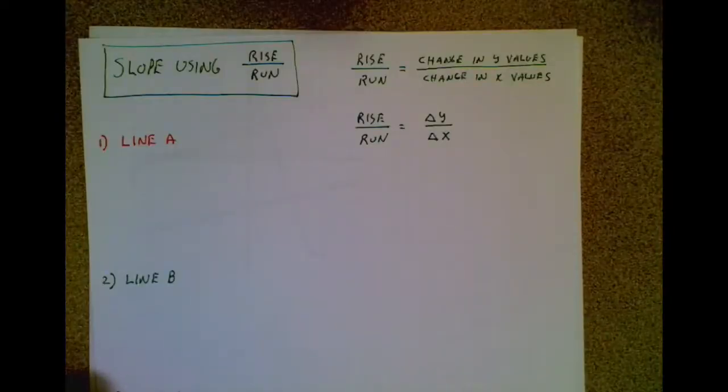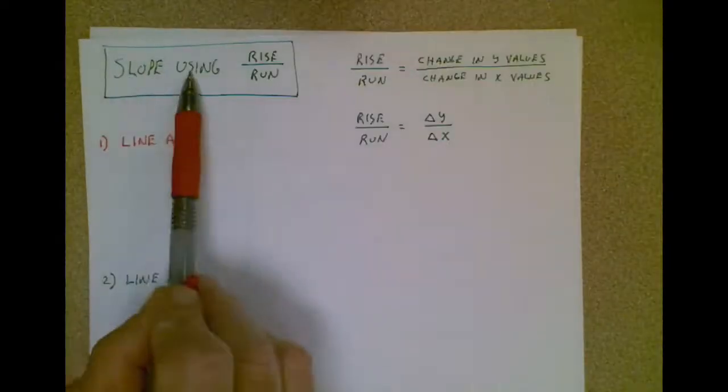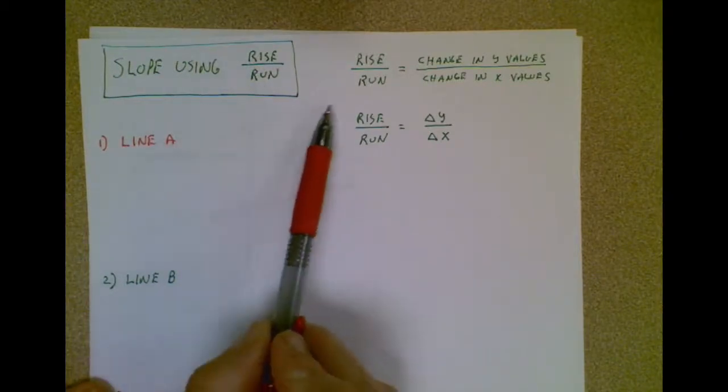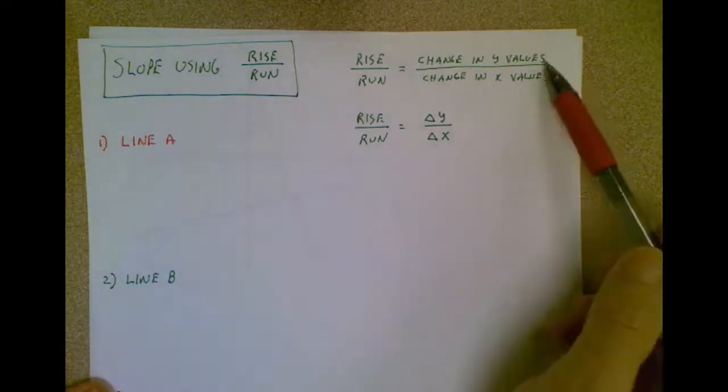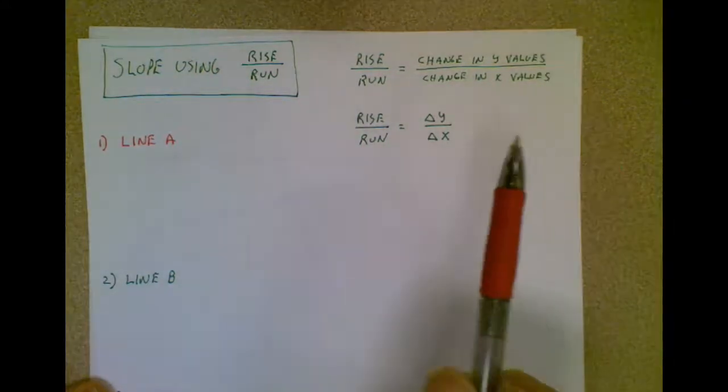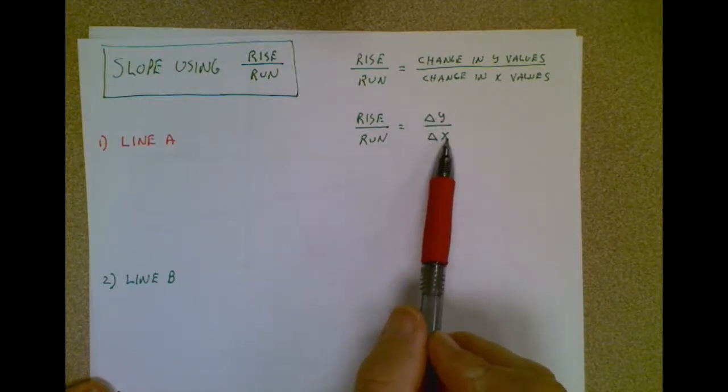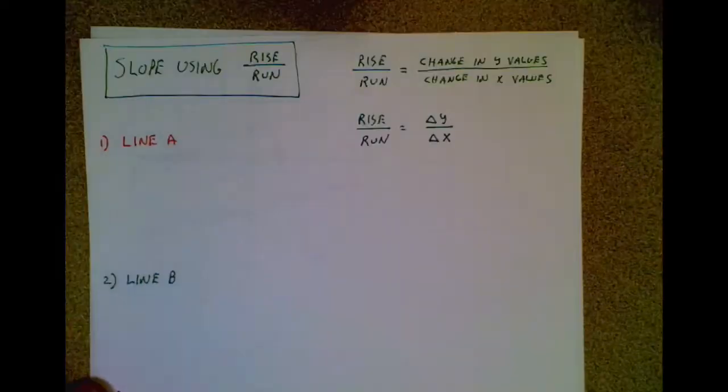So the method we're going to use is slope using rise over run. And as I go through this example, you'll see that when I say rise over run, I'm talking about the change in y values over change in x values, or as your science teacher might say, change in y over change in x. Let's go ahead and calculate these three lines' slope using rise over run, and I think you'll get it.